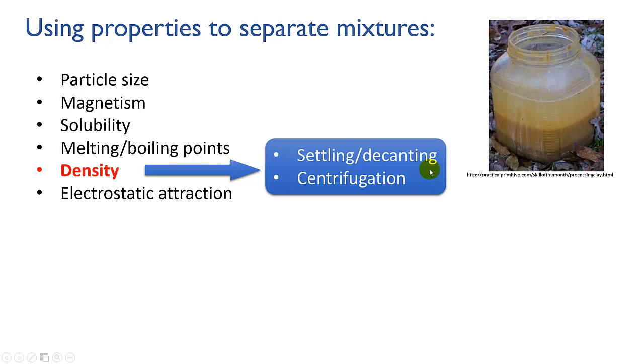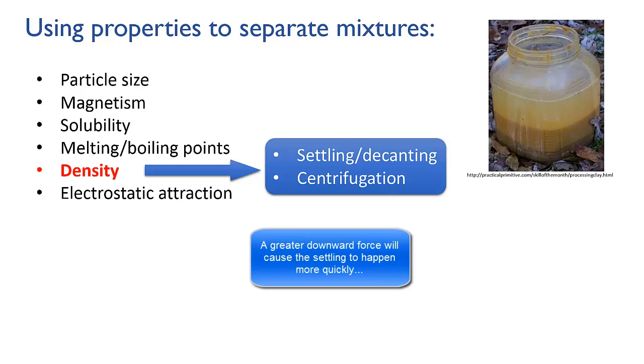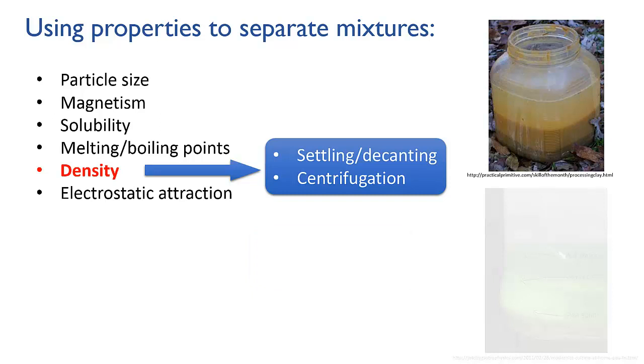To speed up the settling or decanting process, centrifugation can be used. This is where the mixture is spun around at high speeds to effectively increase the force of gravity. This technique tends to be used more in biochemistry and biology than in chemistry, because they have a need to separate out, for instance, different parts of cells, or different sizes of DNA or proteins.